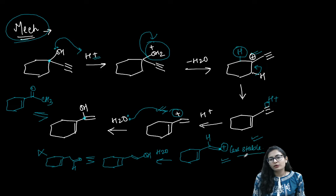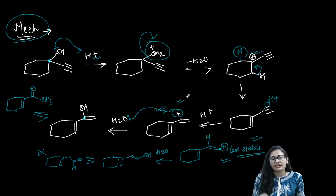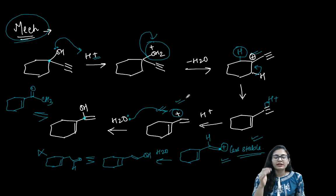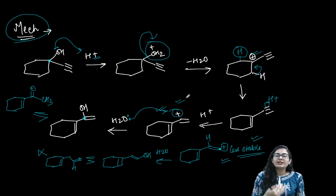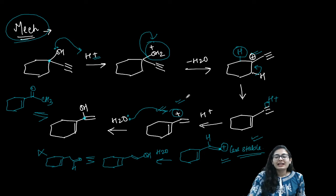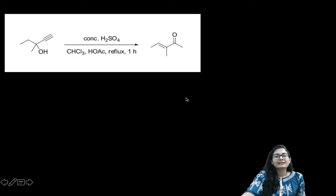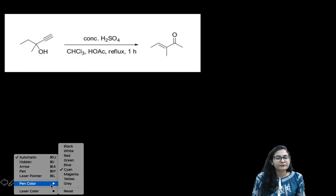The question is: why do we get the ketone and not the aldehyde? If water had attacked the primary carbon, you would get an enol that tautomerizes to give the aldehyde — but that carbocation is less stable and there is no resonance stabilization. The reaction goes through the more stable secondary carbocation, giving the ketone. That covers the general mechanism.